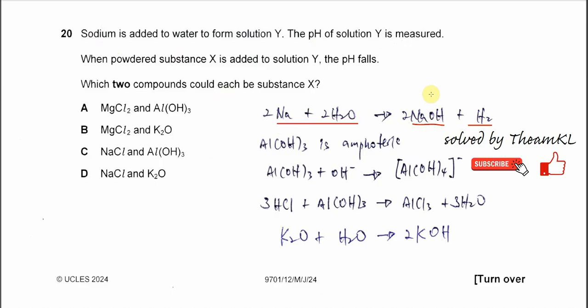So the pH of solution Y must be quite high because it's an alkaline solution. When powdered substance X is added to solution Y, the pH falls. This gives us the hint that substance X is acidic because it can lower the pH of this alkaline solution. Which two compounds could each be substance X?